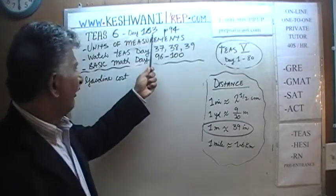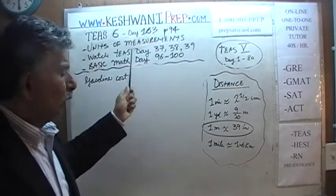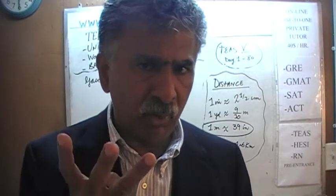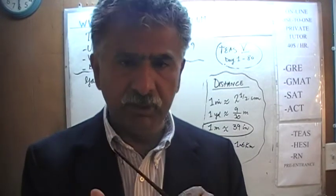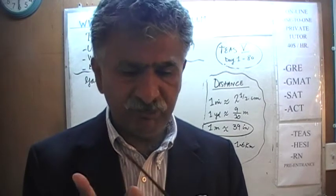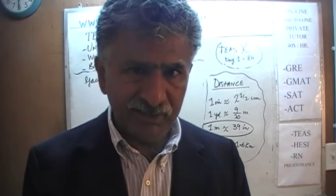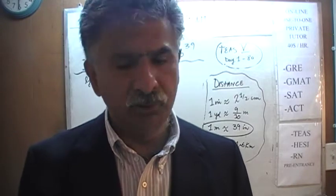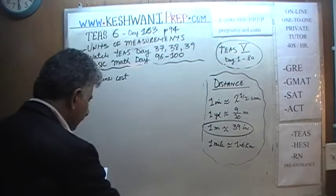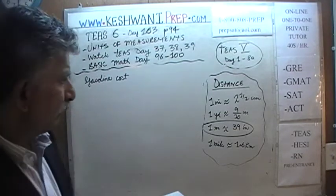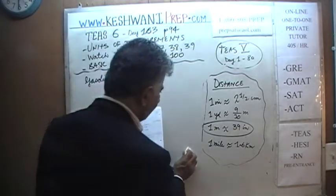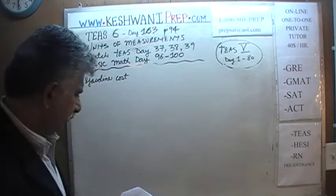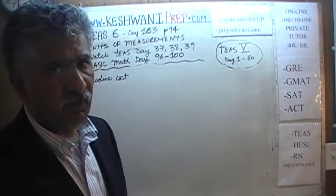Day before yesterday, on day 162, we started this topic. We talked about the fact that when we are dealing with units of measurements, we have to deal with three broad categories: things dealing with distance — which we covered — then weight, which we did yesterday. Today we are going to talk about liquid things, where we have to worry about volumes. Let's put down on the blackboard what we need to know for the exam. There aren't too many things — just basic things. We're done with the distance.